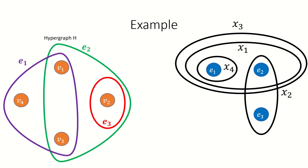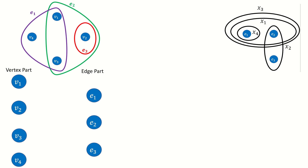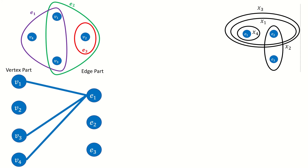Now let's find the incidence graphs. For our original hypergraph, create the vertex set of the incidence graph. Again, to generate the edge set, we only need to look at the edges incident to a single part of this bipartite graph, so let's choose the smaller part. e sub 1 will be adjacent to v sub 1, v sub 3, and v sub 4. e sub 2 will be adjacent to v sub 1, v sub 2, and v sub 3. e sub 3 will be adjacent only to v sub 2.